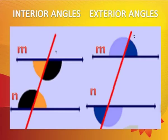Interior angles: in this figure we have two lines M and N with a transversal line T intersecting both lines. Interior angles means angles that lie between the two lines. The angles that lie between the two lines M and N are called interior angles. Now, exterior angles.